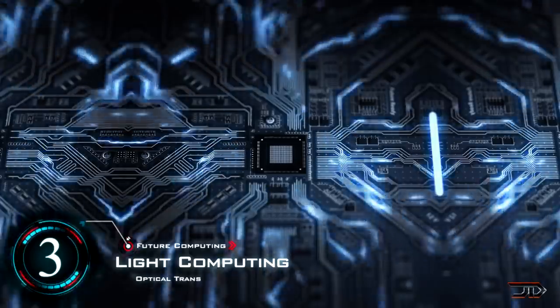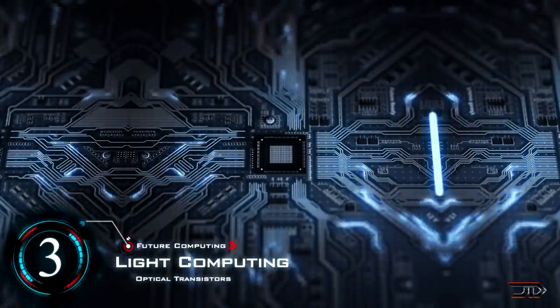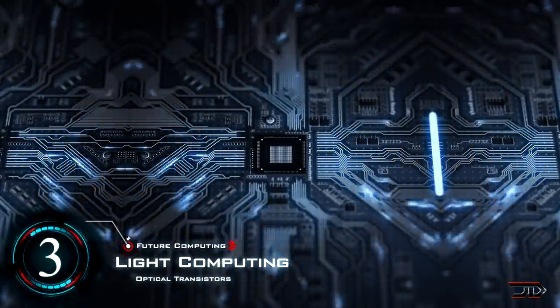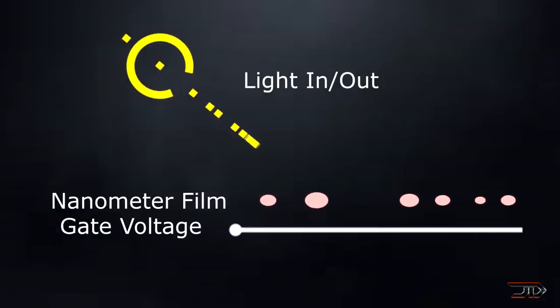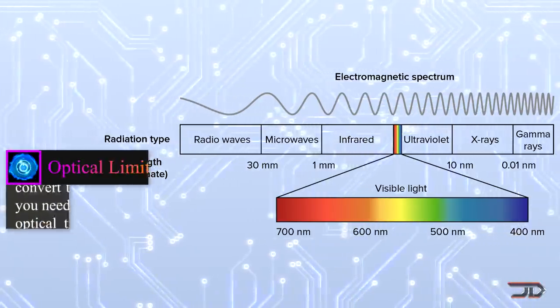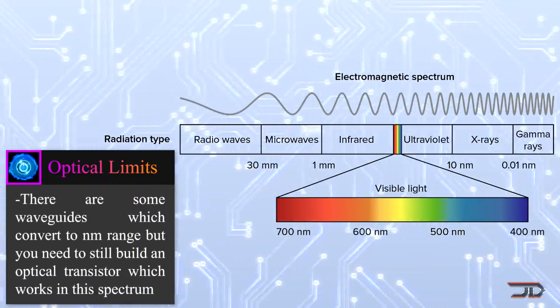At number 3, optical computers. In order to make these computers work on light, you need optical transistors. But there's a very big problem when it comes to light. Light has a relatively large wavelength, nowhere even close to this nanometer threshold achieved by silicon right now.